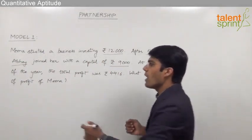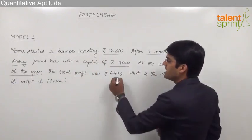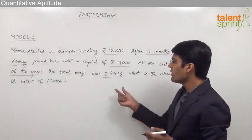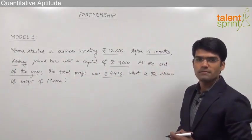At the end of the year, that is after 12 months when the profit was calculated, it came out to be 4,416. We need to find out what will be the share of Meena out of the total profit of 4,416.